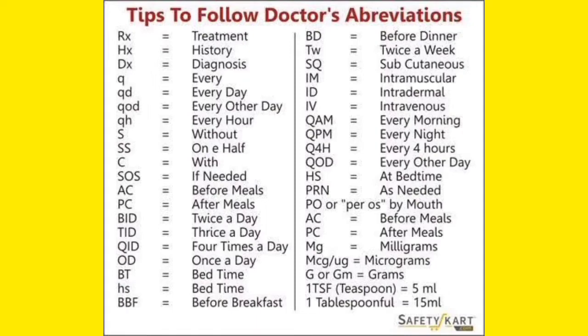BID means twice a day, TID means thrice a day, and QID means four times a day. OD means once a day. BT means bedtime and HS also means bedtime. BBF is also very common in prescriptions — BBF means before breakfast. BD sometimes means before dinner, but generally BD actually means twice a day. TW means twice a week.